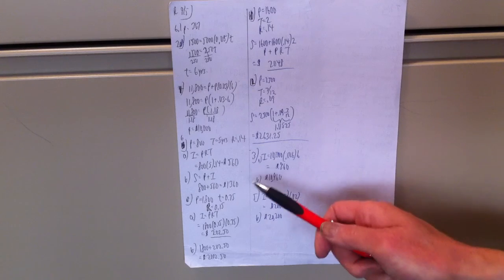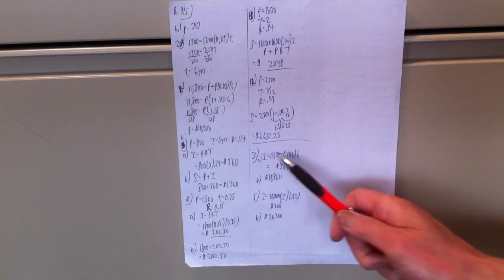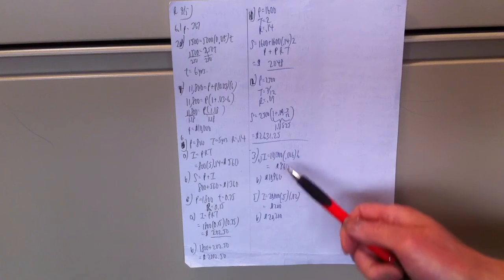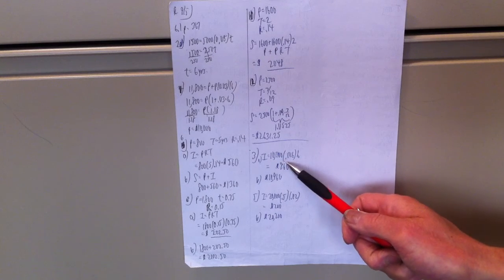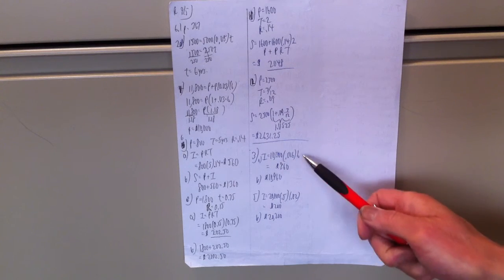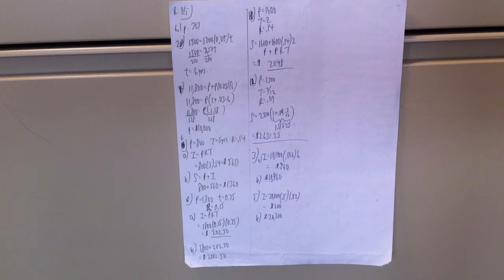Going back to some odd problems. 3a, interest is principal times rate times time, $10,000 times 0.016 as the rate, 1.6% times 6 years, $960.